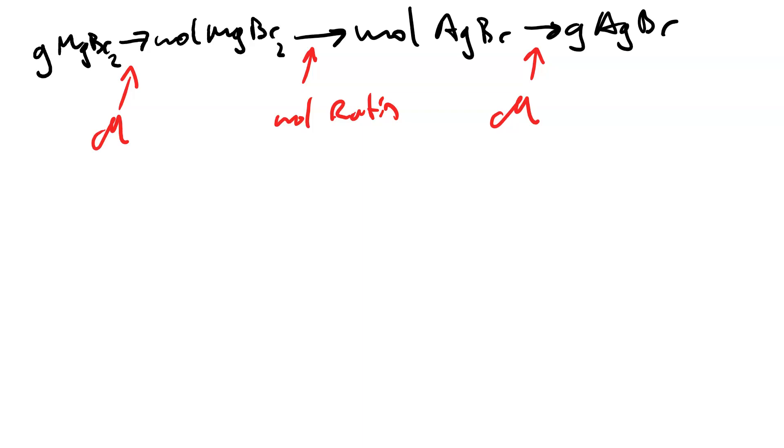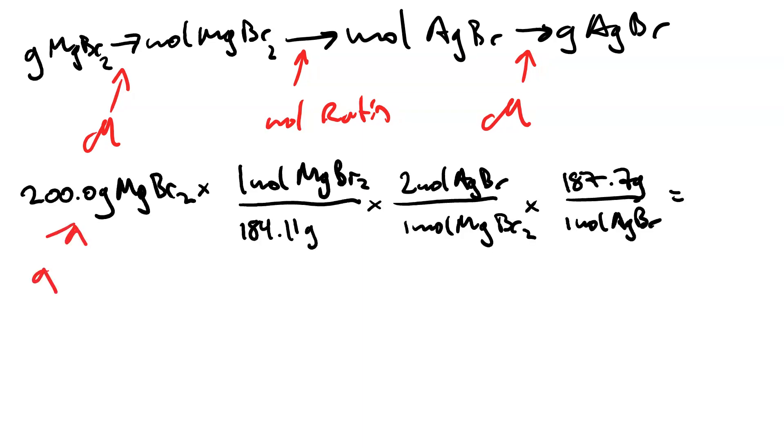So we started out with 200 grams of MgBr2. We use the molar mass to divide by the molar mass to make grams of MgBr2 go away. In the next step, we use a mole ratio to make moles of MgBr2 go away and convert to moles of AgBr. In the final step, we use the molar mass of AgBr to make moles of AgBr go away and get grams of AgBr. And when I punch it into my calculator, I get 407.8 grams. That is the theoretical yield.